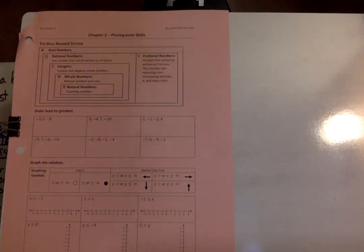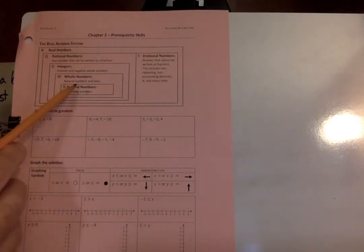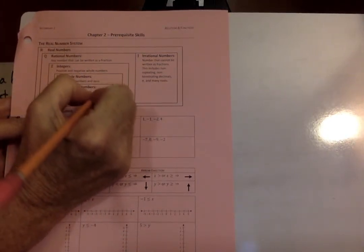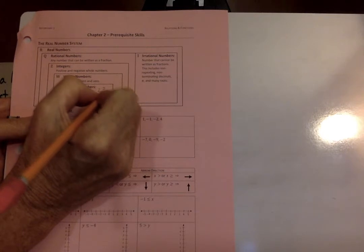Hello students. Today we will be going over Chapter 2 prerequisite skills. We're talking about the number system, so we're talking about the natural numbers that start with our counting numbers: one, two, three, and they go on forever.